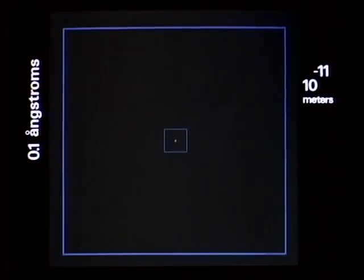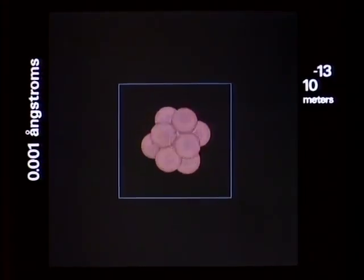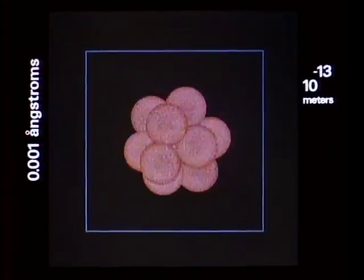This carbon nucleus is made up of six protons and six neutrons. We are in the domain of universal modules. There are protons and neutrons in every nucleus, electrons in every atom, atoms bonded into every molecule, out to the farthest galaxy.